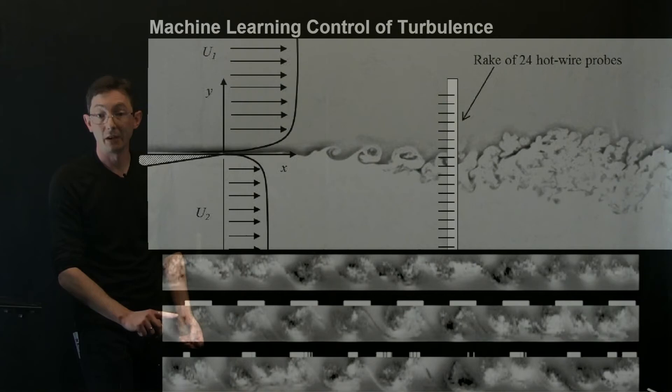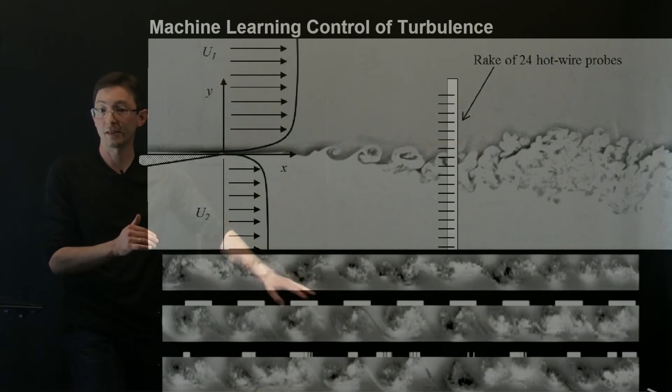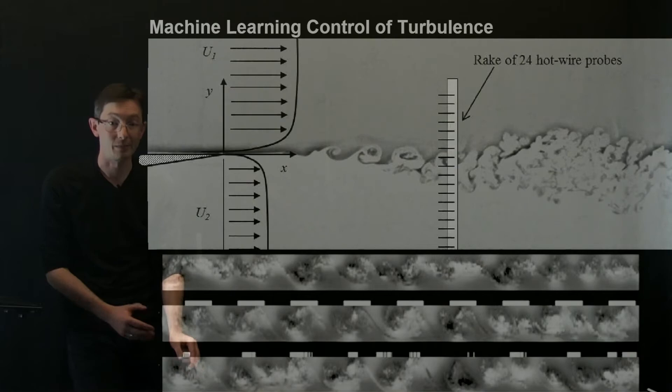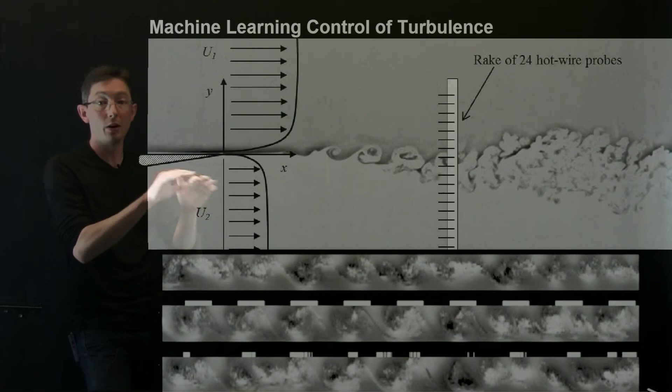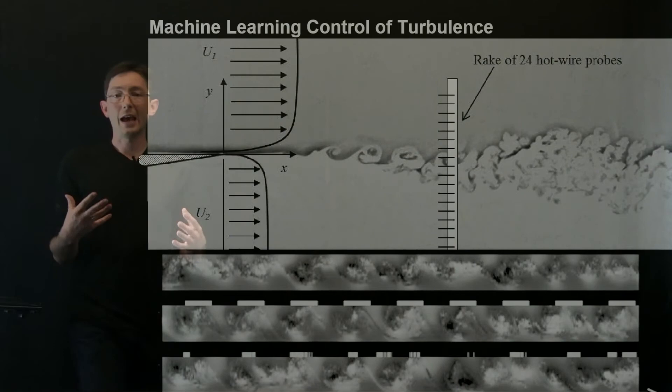Basically the top is the natural flow. The middle is open loop forcing at a periodic frequency, kind of the best periodic frequency. This was optimized. And the bottom is the genetic programming control, which obtains similar mixing enhancement, but with much, much decreased actuation cost. You have to blow out of these ports much less of the time. So that is kind of the basic idea.